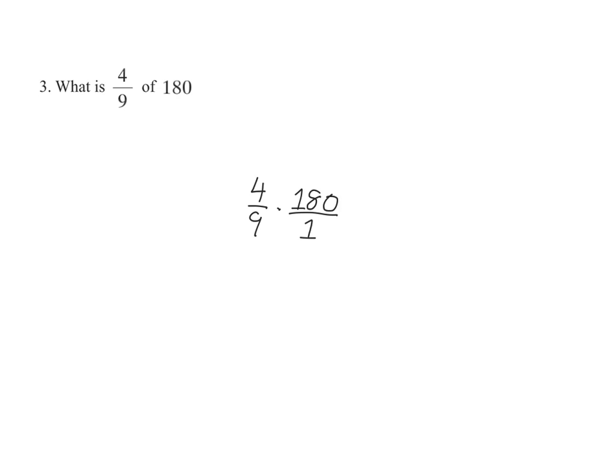Now we can multiply across as we did in the previous example. That is 4 times 180 gives us 720 and 9 times 1 is equal to 9.